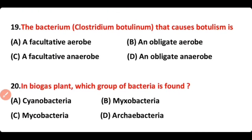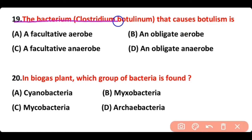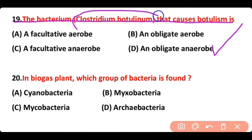Question number 19. The bacterium Clostridium botulinum that causes botulism — is it facultative aerobic, obligate aerobic, facultative anaerobic, or obligate anaerobic? The correct answer is option D. Clostridium botulinum is an obligate anaerobic bacteria.